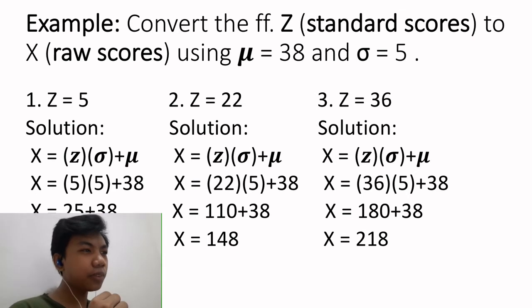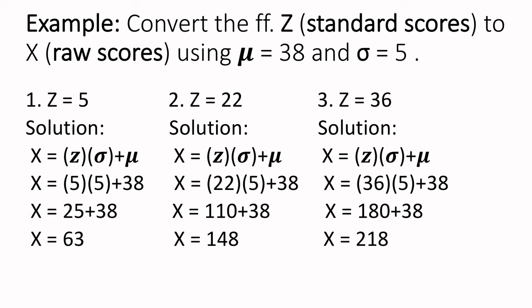convert the following z to x using mean equals to 38 and standard deviation equals to 5. Number 1, z equals to 5. Solution, x equals to 5 times 5 plus 38. 5 times 5 equals to 25 plus 38 equals to 63. So, x equals to 63.